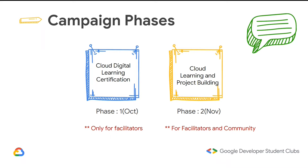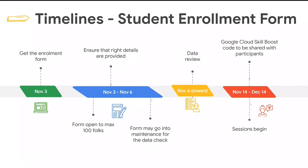The campaign has two phases; it is a three-month-long campaign. The first half was only for the facilitators, and the second half is for facilitators and the community — so your involvement starts from this point. The enrollment form was supposed to come by November 3rd; I haven't yet received it, so I'll be sharing the enrollment form with you as soon as I get it.